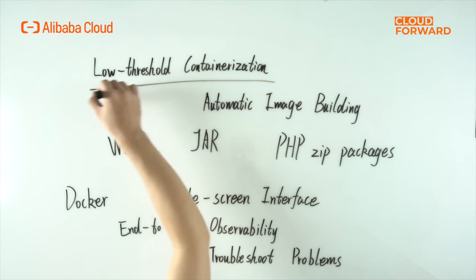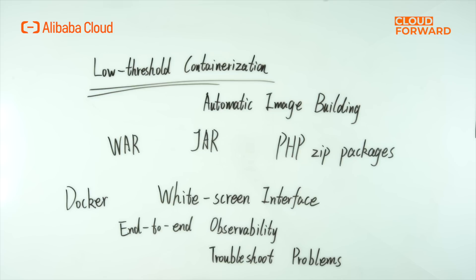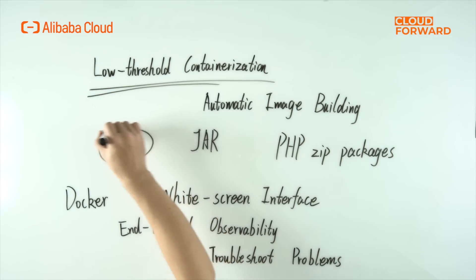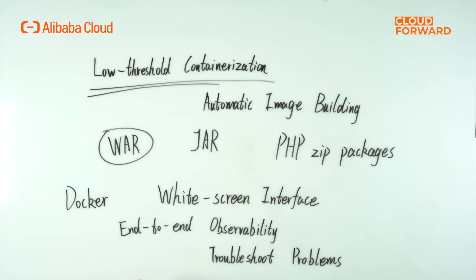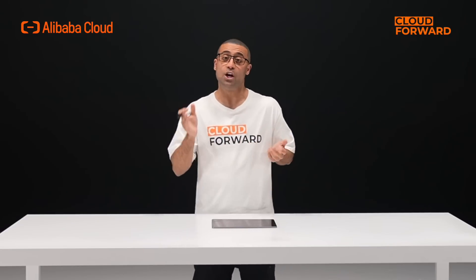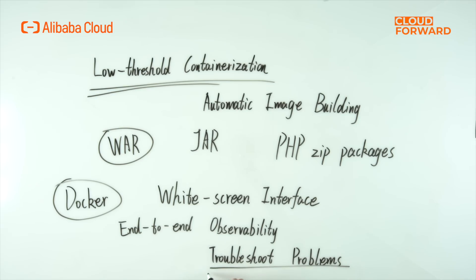SAE helps users shield the technical details of Kubernetes and achieve low-threshold containerization of applications, facilitating seamless adoption of Kubernetes. Specifically: first, it provides the ability to automatically build images and offers multiple ways to create images such as WAR, JAR, and PHP zip packages, lowering the threshold for customers to make Docker images. Second, users no longer need to worry about complex network and storage plugin compatibility with Kubernetes, nor stability risks brought by Kubernetes version upgrades. Third, it provides end-to-end observability with a white-screen interface, making it easy for users to troubleshoot problems.